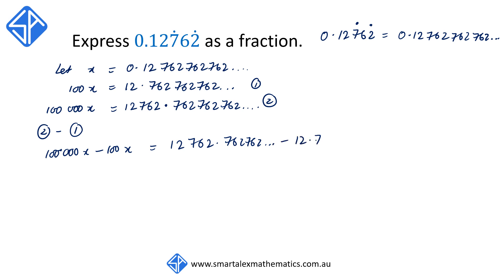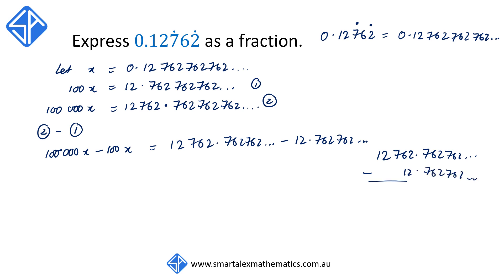Again, if we set this up as a column subtraction, we're going to see that since all the digits after the decimal point are identical, we're going to be able to cancel them out, so that we're left with 12,750.